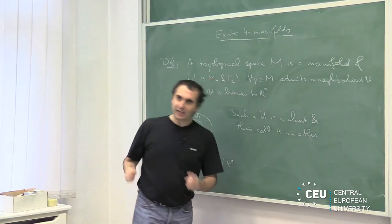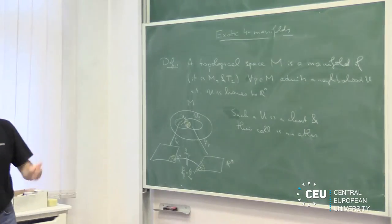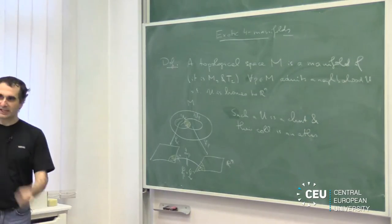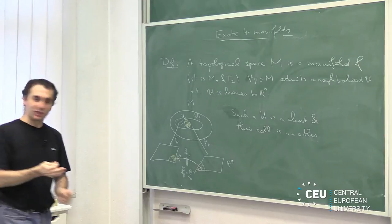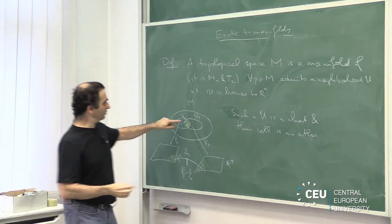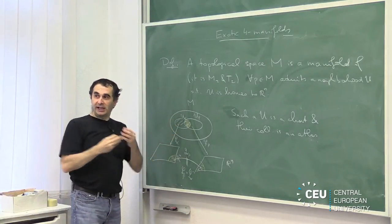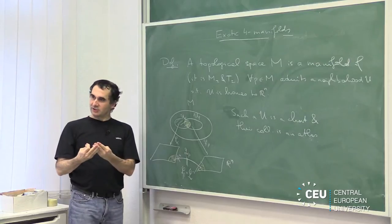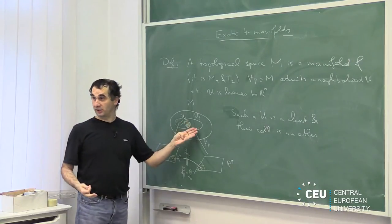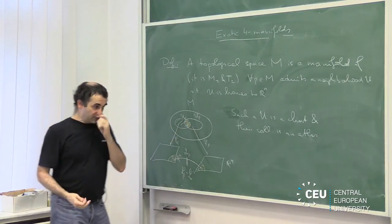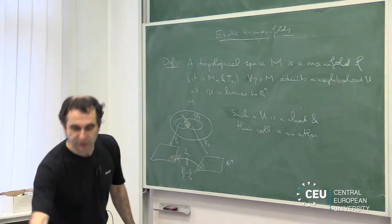It's exactly like an atlas you buy about the United States — a big booklet where each page tells you how to move around in a little neighborhood, and the intersections tell you how to go from one chart to another. This is why I brought up this notion: these are basic objects in topology.